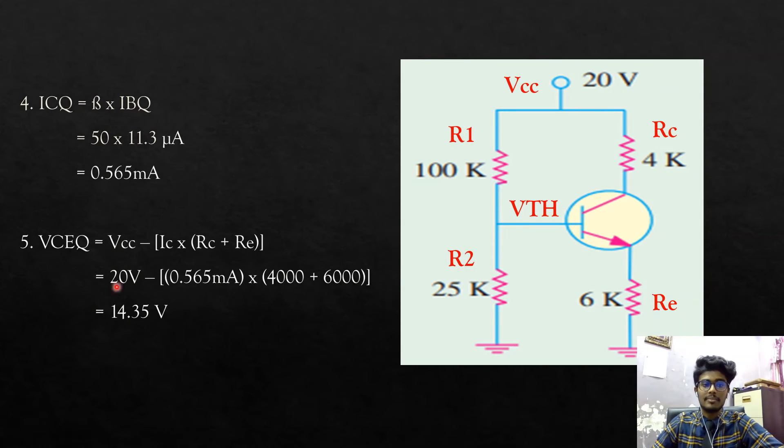For the next question, we must find the ICQ. ICQ is equal to beta times IBq. So, IBq and beta are refined, which is beta is 50 and IBq is 11.3 microampere. So, the value of ICQ is 0.565 milliampere.